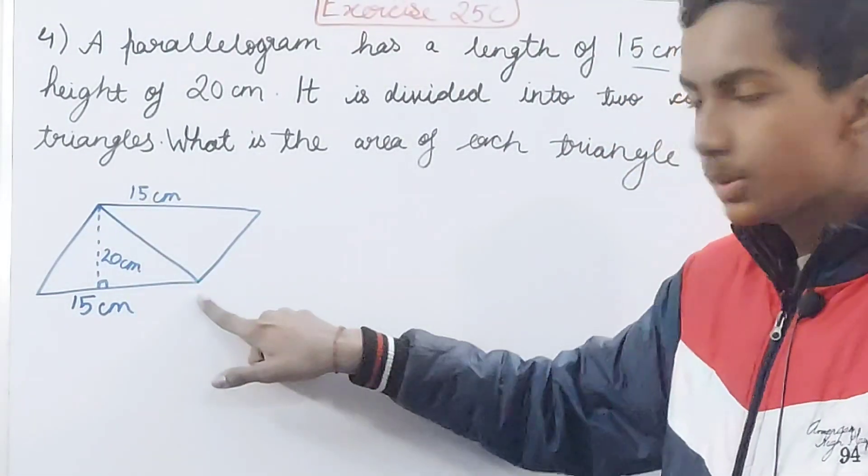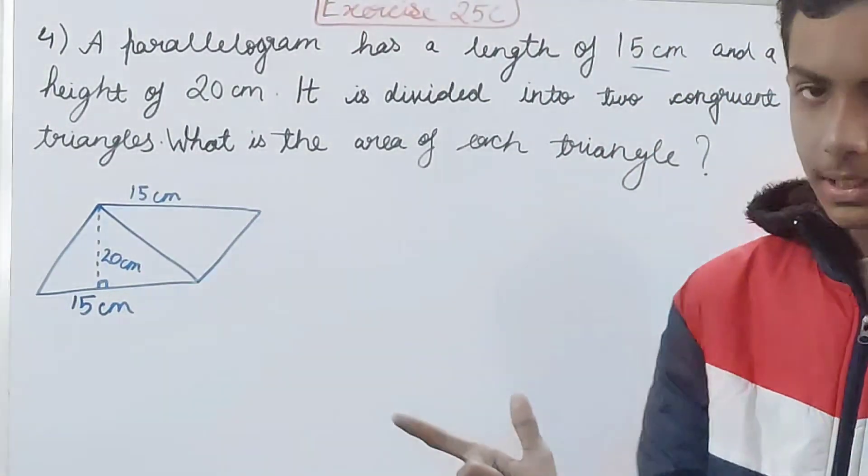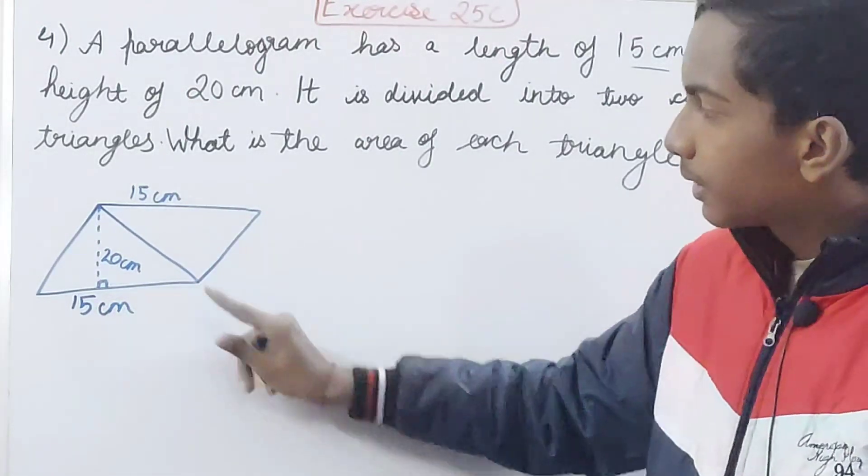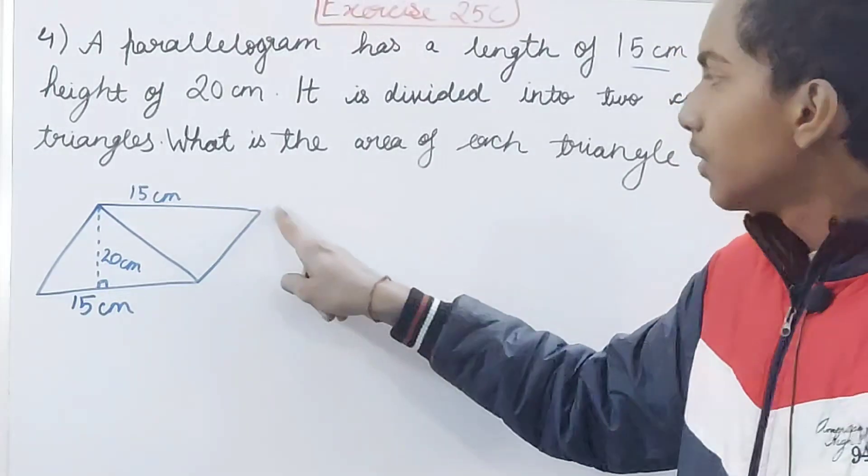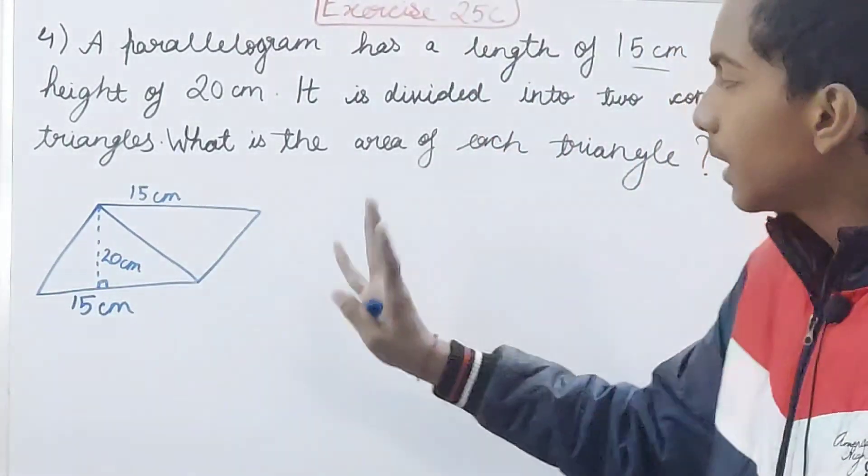This diagonal you can see is dividing my parallelogram into this triangle and this triangle. You can make one more here if you feel like but try to understand it this way only.